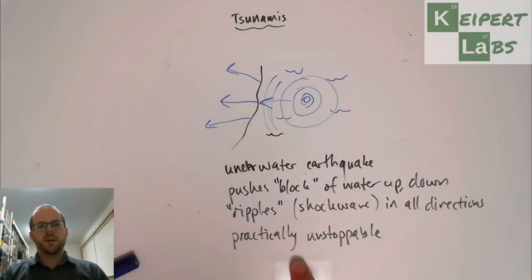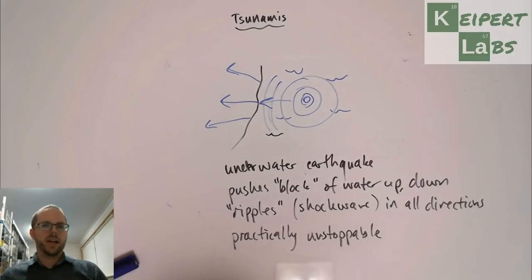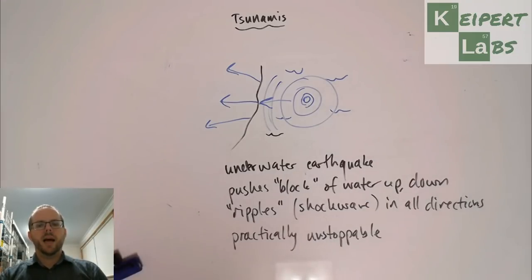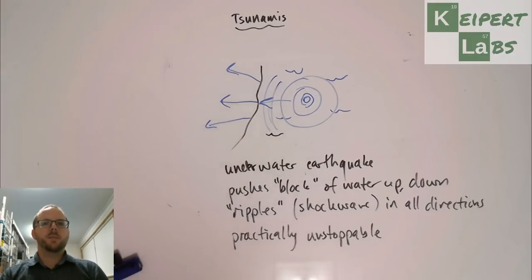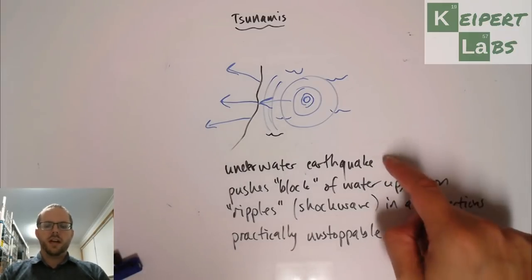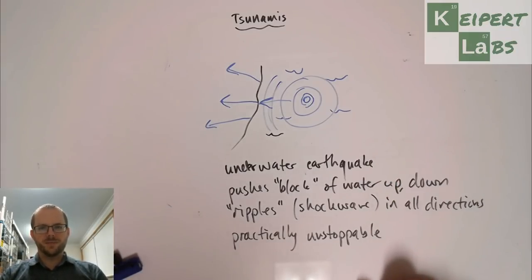These tsunamis can cause a massive amount of damage because the water carries all of that debris with it — boats, cars, and other material pushing massively inland as a result of this movement of water. Not only does it destroy things in its path, but it leaves a whole lot of rubbish behind that then needs to be cleaned up. So we've recapped the concept of the earthquake, looked at the example of a tsunami, what causes it, and some of the damage it can cause. Thanks very much for watching. Bye for now.